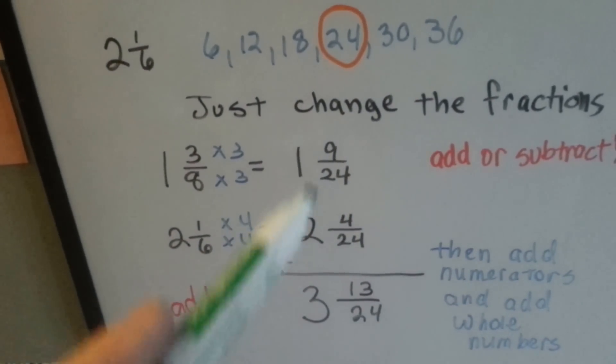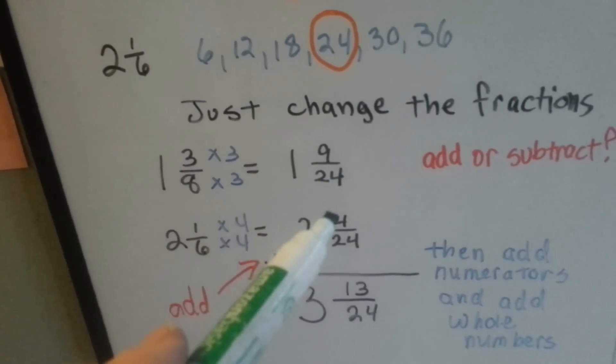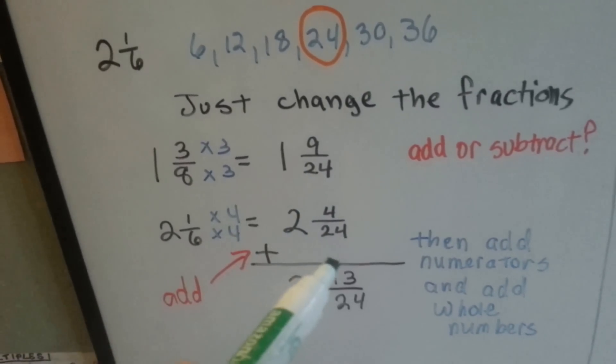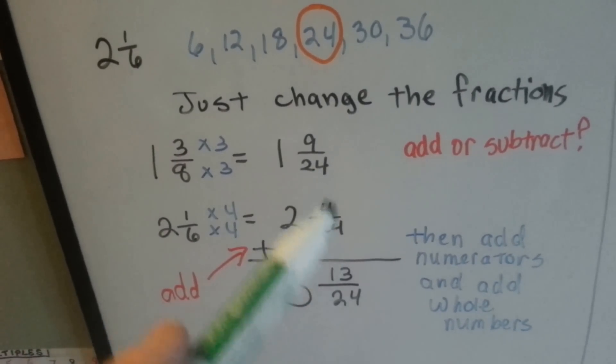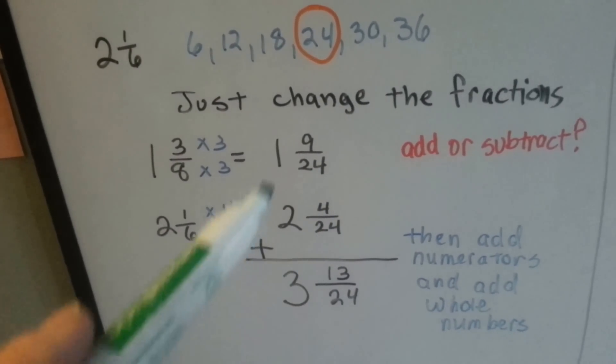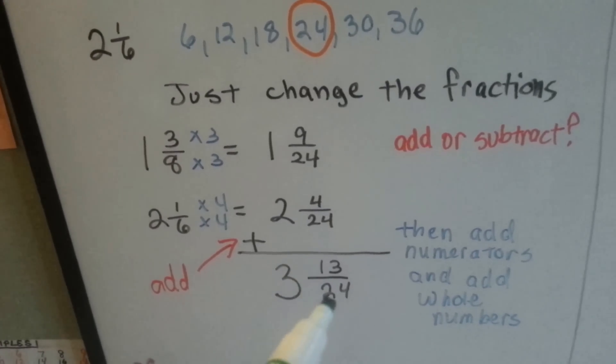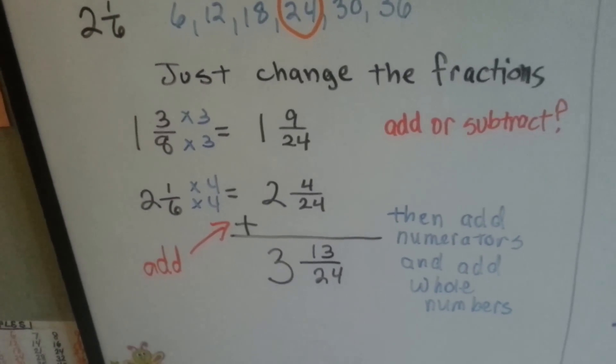So we're going to put an addition sign here and we're going to add these. 9 and 4, we add the numerators, is 13 and we put it over the same denominator they have, 24. Then we just add the whole numbers and get 3 and 13 24ths. That wasn't that hard, was it?